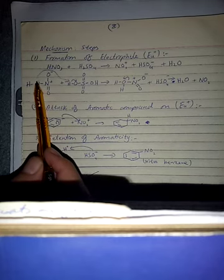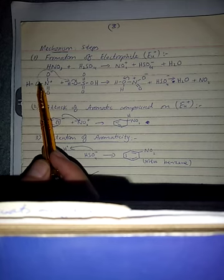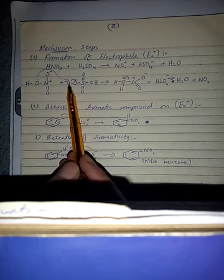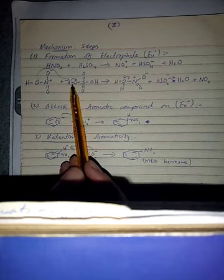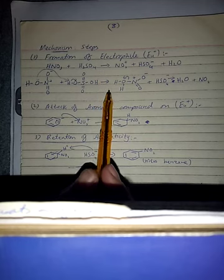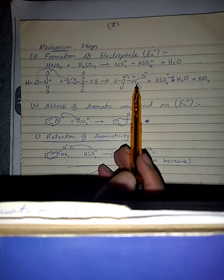We can write it as the OH ion of HNO3 will attack on the H-positive, that is proton of sulfuric acid, which will produce water. And as a result NO2 positive will be produced. This NO2 positive will be produced which is an electrophile.